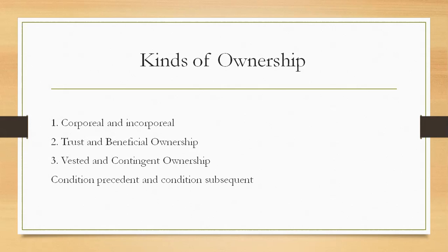For example, if A gives the gift of a car to his son B, the latter will have a vested interest in the car. However, if A gifts the car to B provided he marries a particular girl X, B's interest is merely contingent — it is conditional on an event which may or may not happen. If he does marry X, his interest becomes vested.